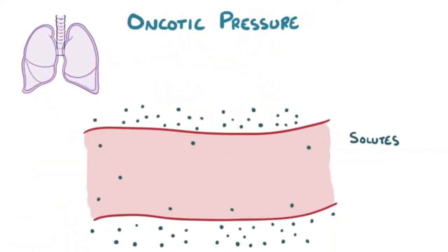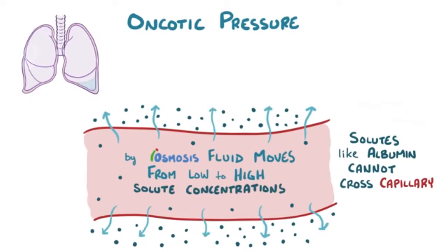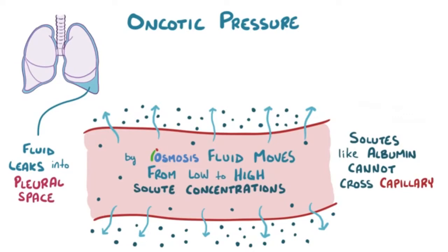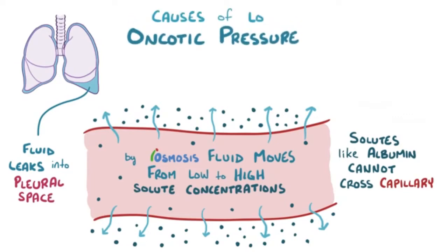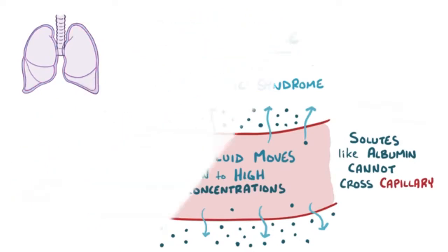Oncotic pressure results from the inability of large solutes, such as albumins, to move across the capillary. By osmosis, fluid moves from areas of low solute concentrations to high solute concentrations. Fluids therefore flow out from the capillaries and into the pleural space when there is decreased oncotic pressure in the blood vessels. Two common causes of low oncotic pressure are cirrhosis, where the liver makes fewer proteins, and nephrotic syndrome, where proteins are lost during urination.